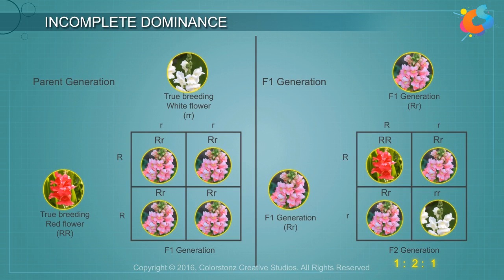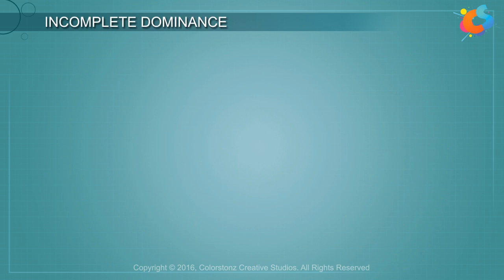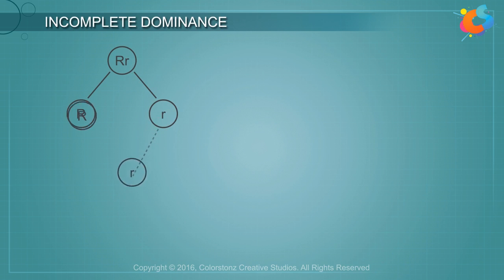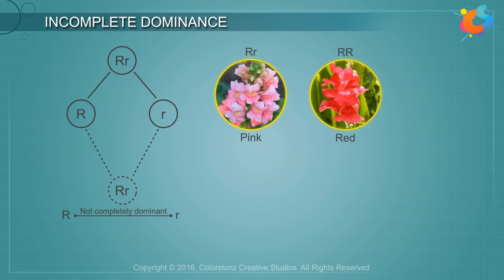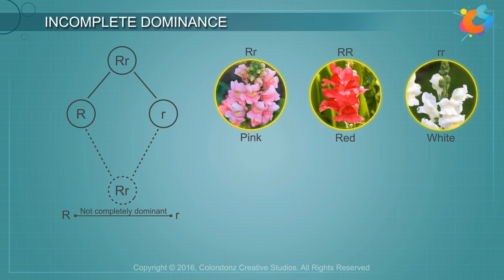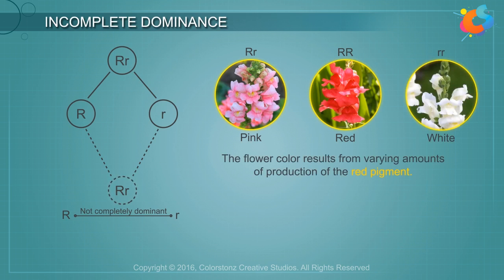The appearance of the pink flower seemed as if the two homozygous conditions were blended together. In the cross, R was not completely dominant over r, making it possible to distinguish Rr (pink) from RR (red) and rr (white). The actual flower colour phenotype probably results from varying amounts of production of the red pigment.